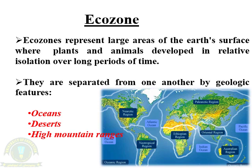An animal species cannot occupy the whole world in respect to time or space. Instead, each is restricted to a definite range or area of distribution on the earth. These species are separated from one another by different geological features such as oceans, deserts, and high mountain ranges. These physical features pose a barrier for animals or plants to disperse from one place to another.